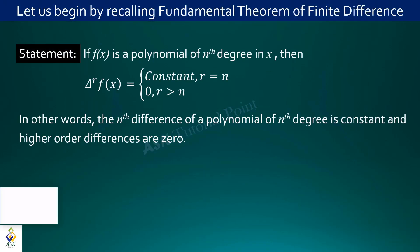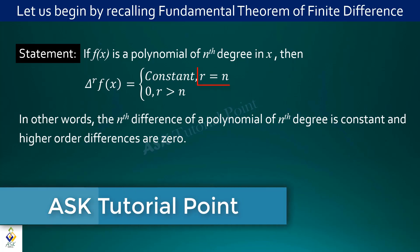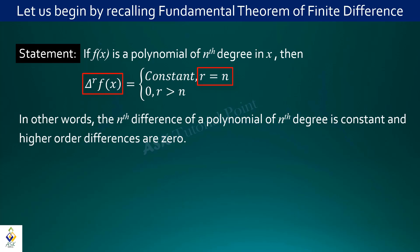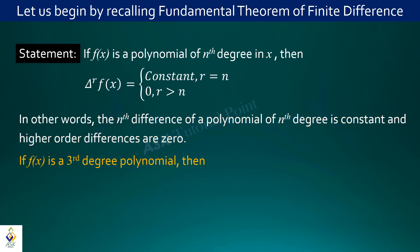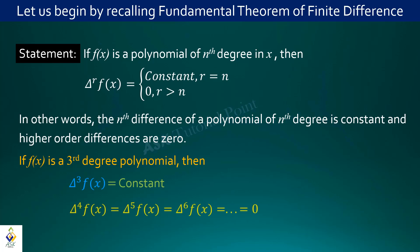In the last class, the fundamental theorem states that the difference operator applied to a polynomial function gives a degree reduction. If the polynomial function is of degree n, applying delta n times gives a constant result, and higher order differences are zero. For example, if f(x) is a third degree polynomial, then the third difference is constant and the fourth, fifth, sixth order differences are zero.